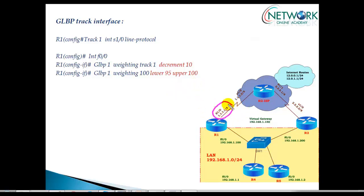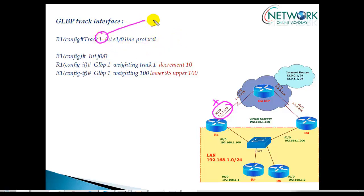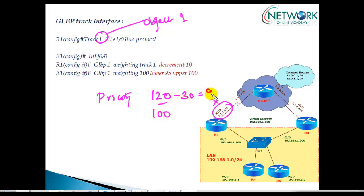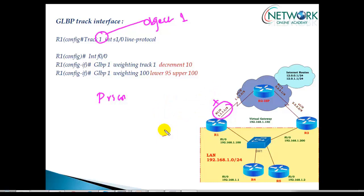There are a lot of changes in the configuration. To track this interface, the first thing you need to do is create a track object. I'm going to create track object 1, which will track the S1/0 interface and check the line protocol status. Then, unlike HSRP and VRRP where we decrement the priority value, here in GLBP it doesn't work based on priority — it works based on a weighting value, and the default weighting of every router is 100.